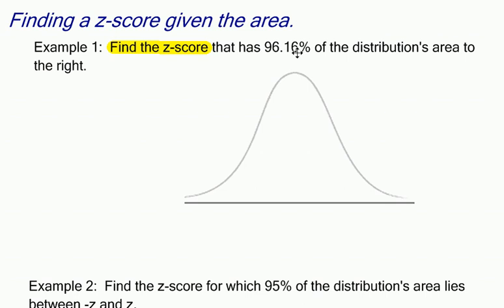Find the z-score that has 96.16% of the distribution's area to the right. So if I think about this, there's some z-score over here. The entire area under the curve is equal to 1 or 100%, so there's going to be some z-score over here.